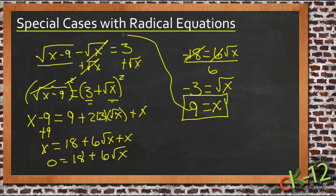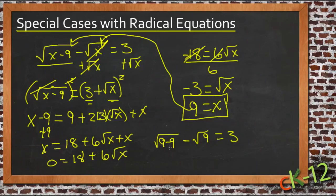And then we'll take that value and put it back into our original equation here, and we get the square root of 9 minus 9 minus the square root of 9 equals 3. 9 minus 9 is 0, square root of 0 is 0, so we get 0 minus the square root of 9, which is 3, equals 3. So we end up with negative 3 equals 3, and that's obviously not true.